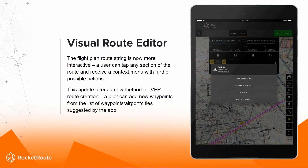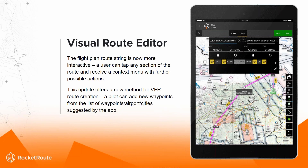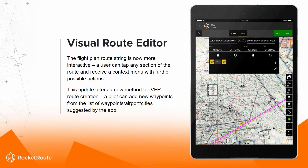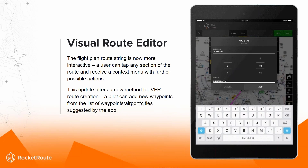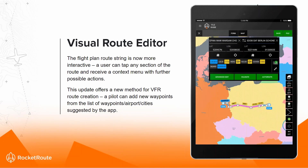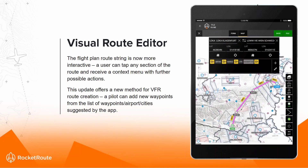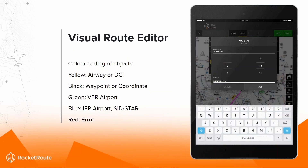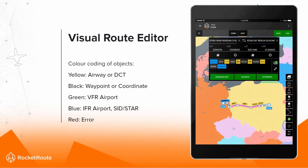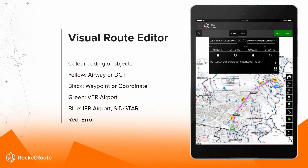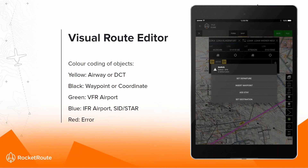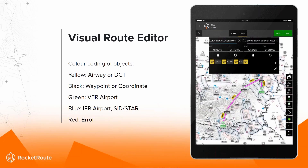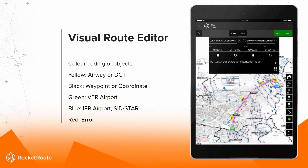The Visual Route Editor is an adjustment to our mobile platforms. The flight plan route string is now interactive — a user can tap anywhere on a section of the route and receive contextual information. This update is especially useful and powerful for VFR flight plan creation and new routes. You can add new waypoints from a list. The route elements are colour-coded: yellow items are airways or DCT direct segments; black are waypoints or coordinates; green items are VFR airports; blue are IFR airports or SID and STAR indicators. Any errors are shown in red.